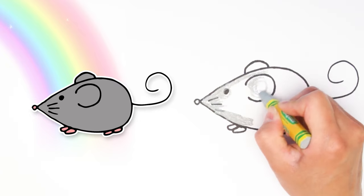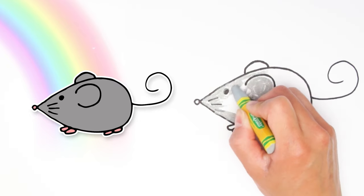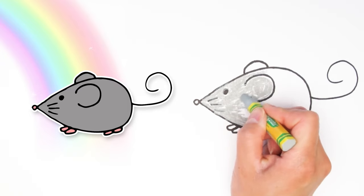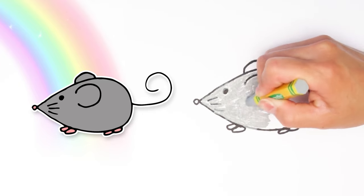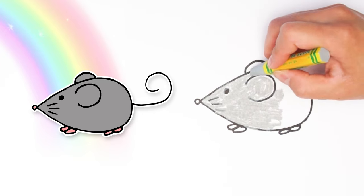Alright, let's keep coloring. You can see that I chose gray to color in the mouse. You can color your mouse any color, like black or brown or white or even a bright color if you want.